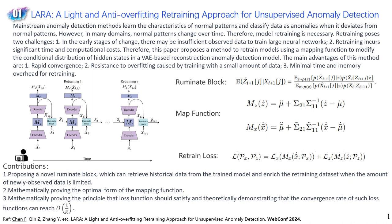Besides, we mathematically prove the optimal form of the mapping function, and we also mathematically prove the principles that the loss function should satisfy, theoretically demonstrating that the convergence rate of such a loss function can reach O(1/k), where k is the iteration count.